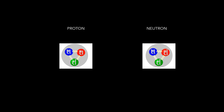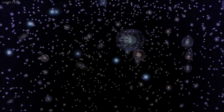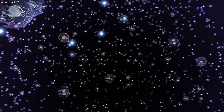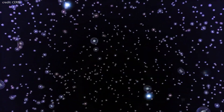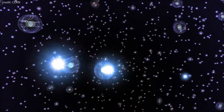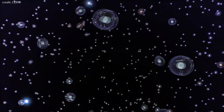As we know, protons and neutrons are made of quarks. Similarly, their antiparticles are made of antiquarks. If matter and antimatter collide, they annihilate each other, releasing a large amount of energy in the form of gamma rays.